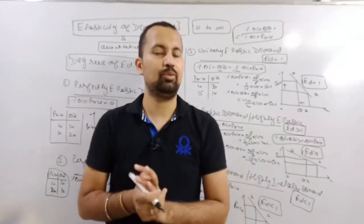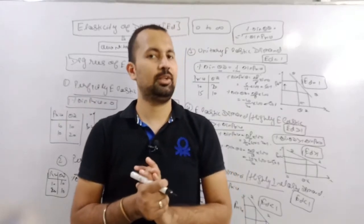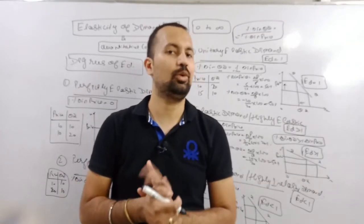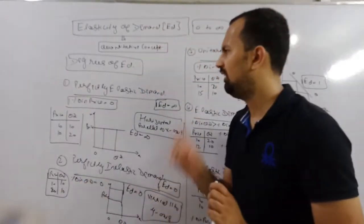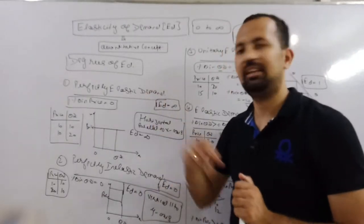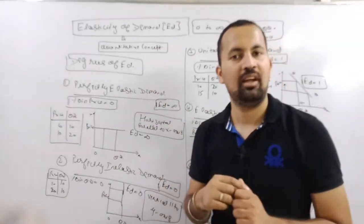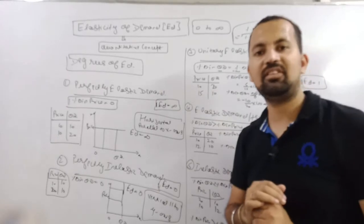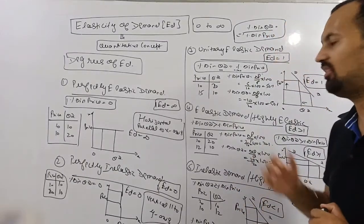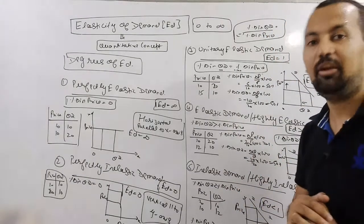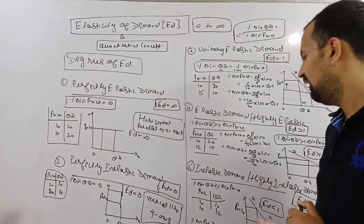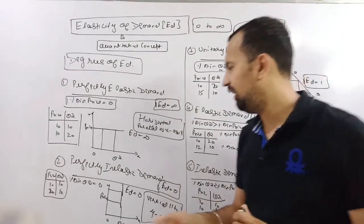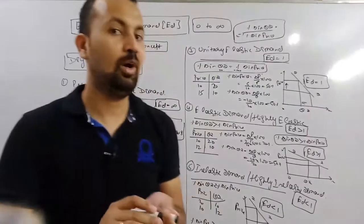To summarize the types: if Ed equals 0, it is perfectly inelastic demand. If Ed equals 1, it is unitary elastic demand. If Ed is greater than 1, it is highly elastic demand. If Ed is less than 1, it is inelastic demand. If Ed equals infinity, it is perfectly elastic demand.